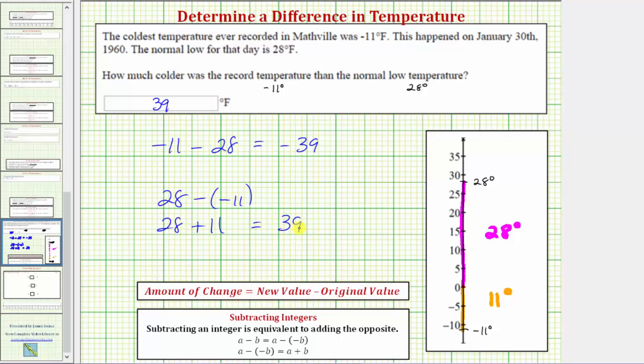The reason this difference is positive 39 is because it tells us that 28 degrees is a 39 degree increase from the record low of negative 11 degrees. And notice from this we can also conclude that negative 11 degrees is 39 degrees colder than 28 degrees.